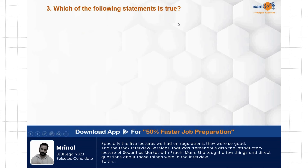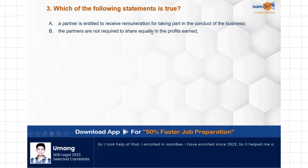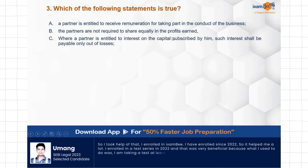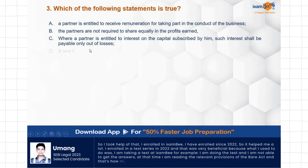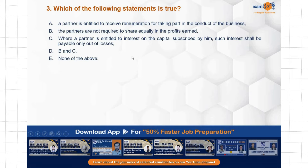Question: Which of the following statements is true? Options: partners are entitled to receive remuneration for taking part in the conduct of business; partners are not required to share equally in the profits earned; where a partner is entitled to interest on capital subscribed by him, such interest shall be payable only out of losses; B and C are correct; none of the above is correct. The correct answer is that none of the above is correct — all these statements are false.